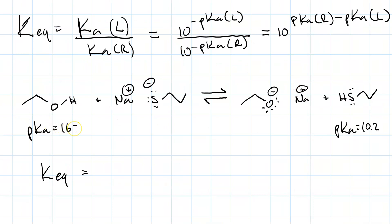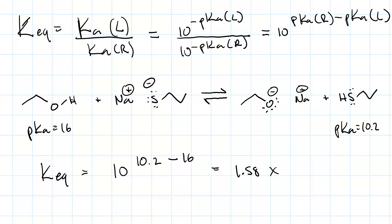Since Ka equals 10 to the negative pKa, Keq equals 10 to the pKa(right) minus pKa(left). Going back to our original equation, with pKa of 16 on the left and 10.2 on the right, Keq equals 10 to the power of 10.2 minus 16, which gives 1.58 times 10 to the negative 6th. That's less than 1, which means the answer is no — ethanol is not a strong enough acid to protonate the propanethiolate.